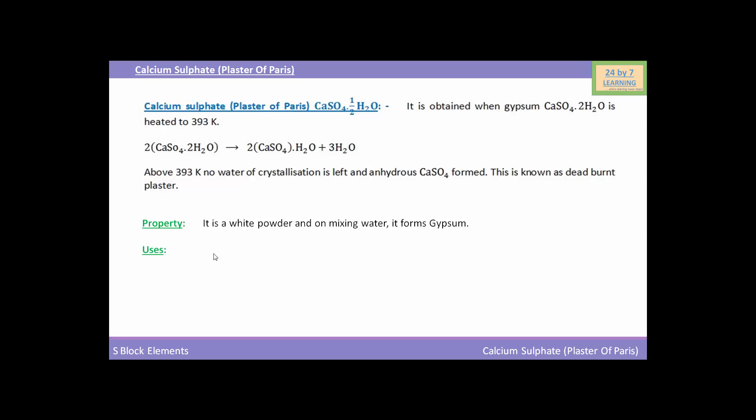Now come to the uses of calcium sulfate or plaster of Paris. It is used in formation of moulds, it is used in dentistry, it is used in surgical bandages, it is also used in film studios for making sets, and it is used in making statues, models and other decorative materials. Thank you.